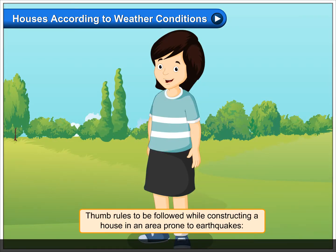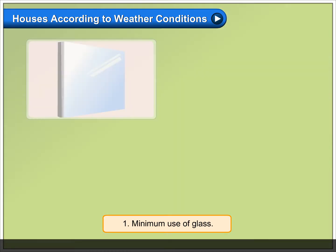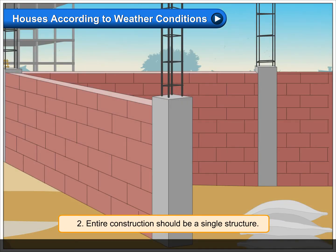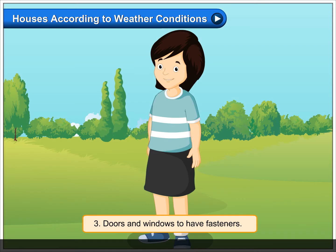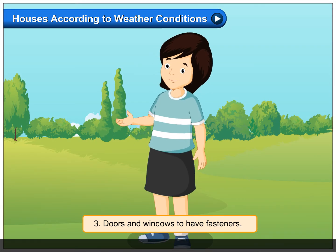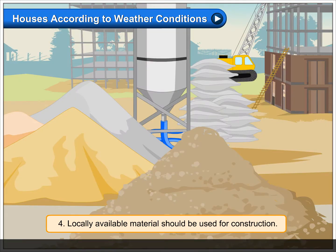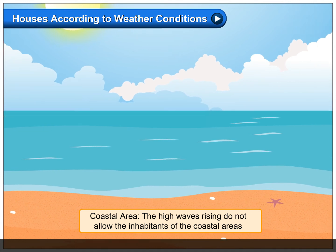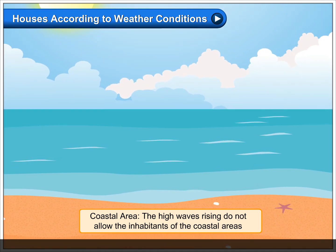Firm rules to be followed while constructing a house in an area prone to earthquakes: one, minimum use of glass; two, entire construction should be a single structure; three, doors and windows to have fasteners; four, locally available material should be used for construction.